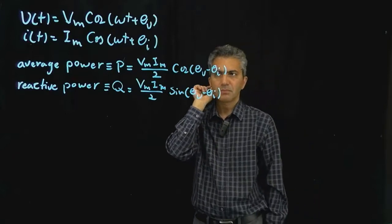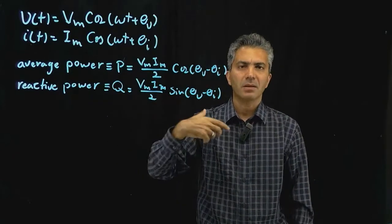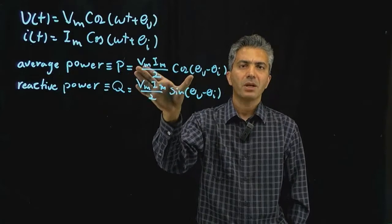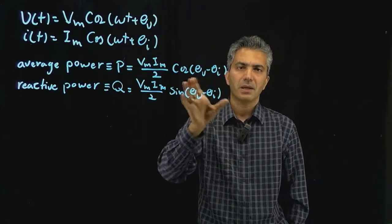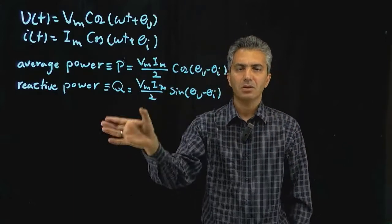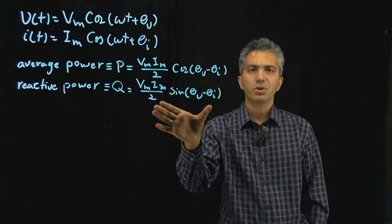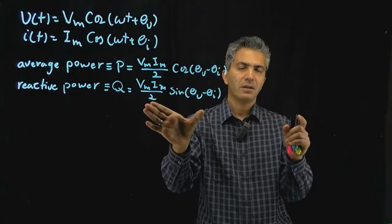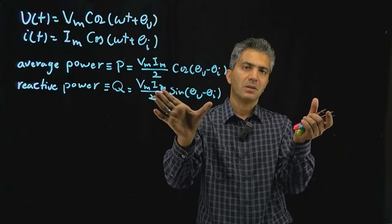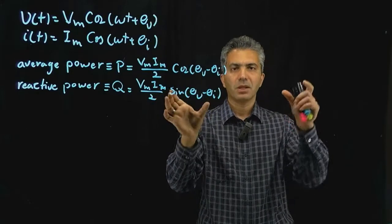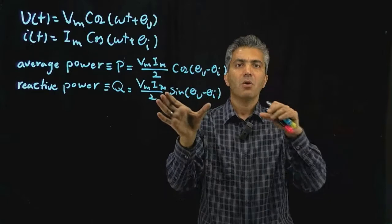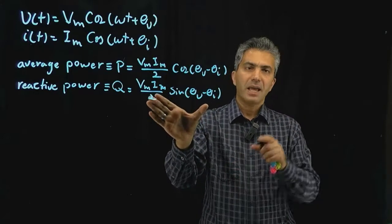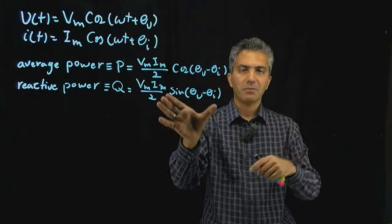The name actually carries some information. Average power is the component of power that is actually transformed from the electrical domain to the non-electrical domain — in other words, it's consumed by the component and will not go back into the electrical domain. Reactive power is the portion that is not consumed and does not leave the electrical domain; rather, it is conserved in the form of potential or kinetic energy — as charge or electric field in a capacitor, or as current, electron movement, or magnetic field in an inductor.